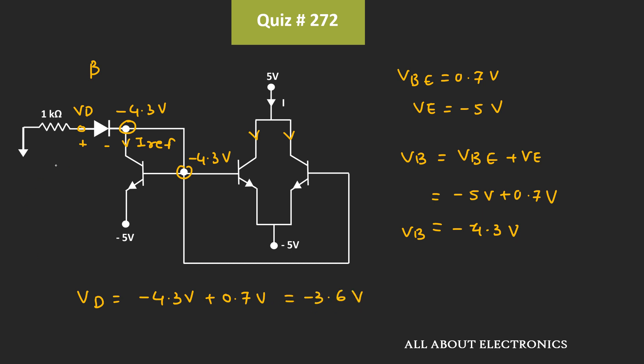And let's say the current which is flowing through this 1kΩ resistor is equal to I'. So, this current I' will be equal to 0 minus –3.6V divided by 1kΩ, that is equal to 3.6mA. So, this current I' is equal to 3.6mA.